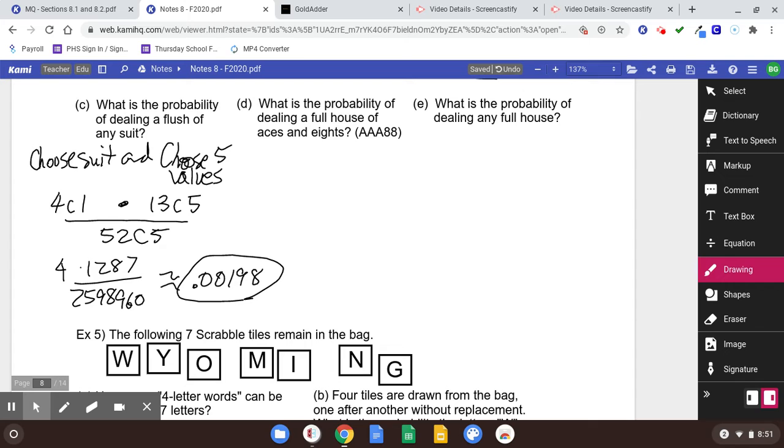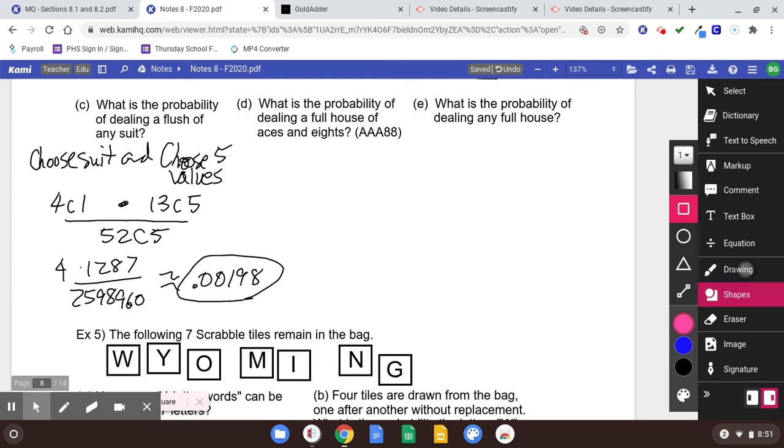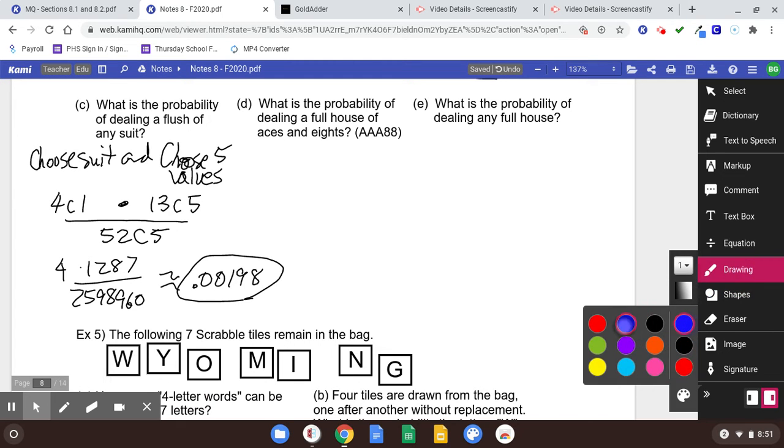Part B says, what is the probability of dealing a full house of aces and eights? In the last section, we did a counting problem like this, but now it's probability. We went with the probability of ace, ace, ace, eight, eight. Aces and eights. So how many ways of getting three aces? Think about it. Three aces out of how many aces? Four. So we're going to have 4 choose 3.